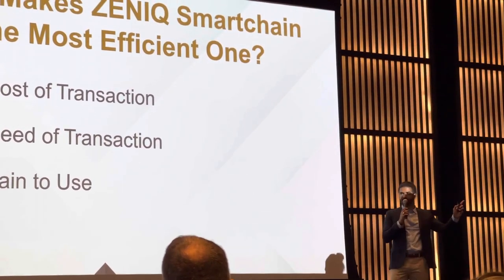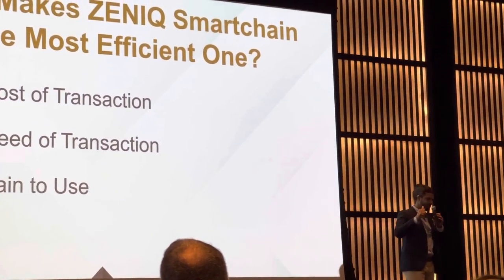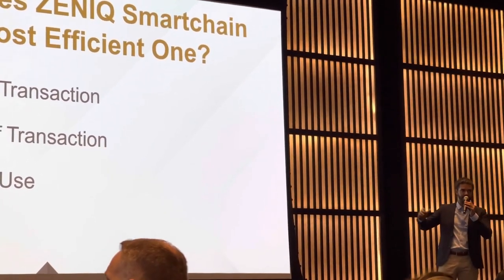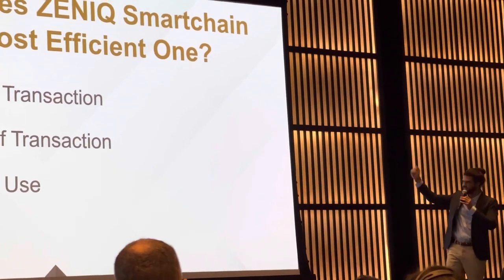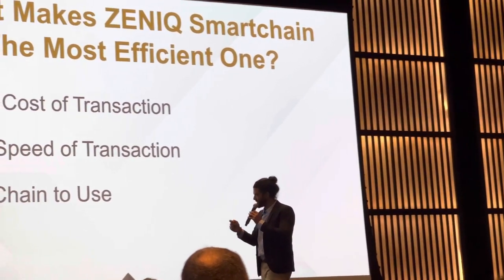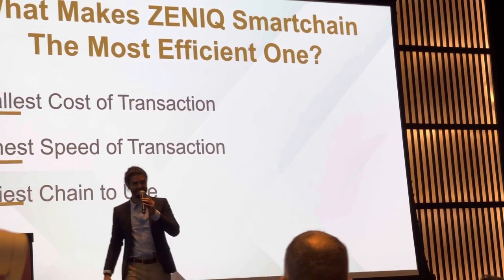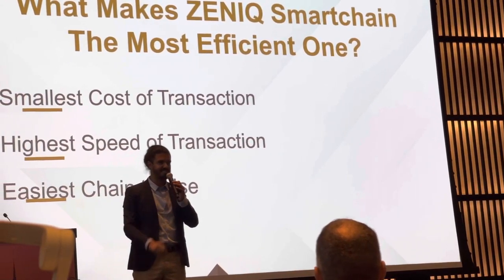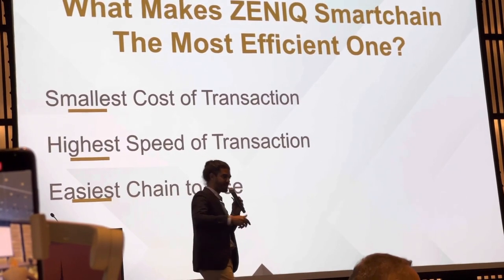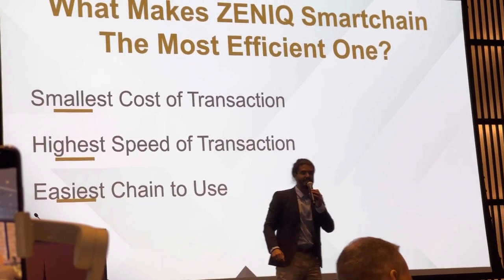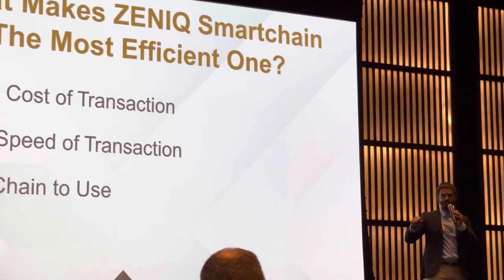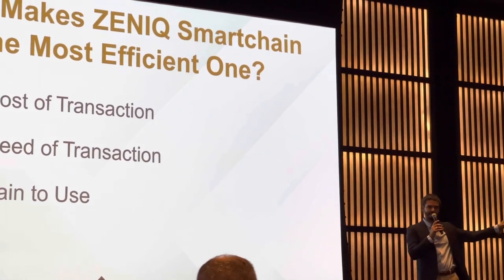Talking about performance again: comparing Ethereum, Binance, and ZNIC Smart Chain — which one has the smallest cost of transaction? ZNIC! Which one has the highest speed of transaction? ZNIC! And which one is the easiest to use? ZNIC — because the developers know. They already learned from Ethereum and Binance, and we're basically taking every talented, experienced developer and bringing them to us. It's easy — we have a fully documented smart chain.